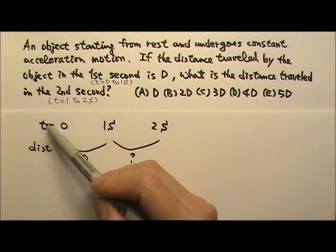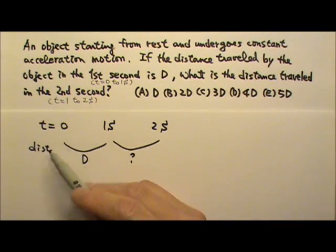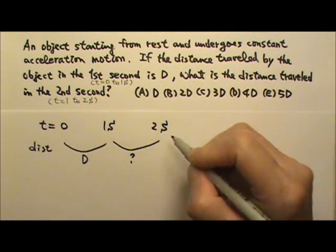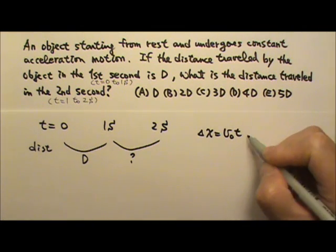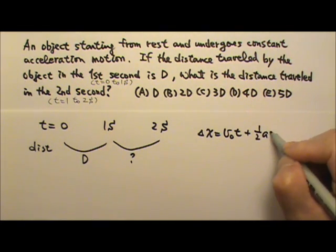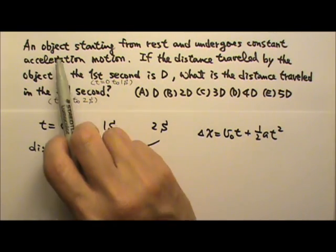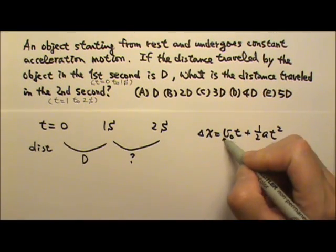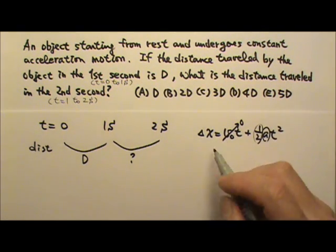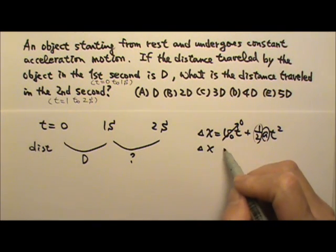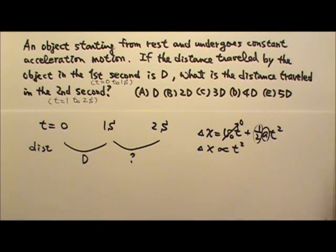We want to relate distance traveled to the time, which means the displacement to the time. So this equation can be convenient: delta x equals v_0 t plus 1 half a t squared. The object starting from rest, so initial velocity is 0. And let's see, 1 half is a constant, acceleration is a constant. That means delta x is proportional to t squared.